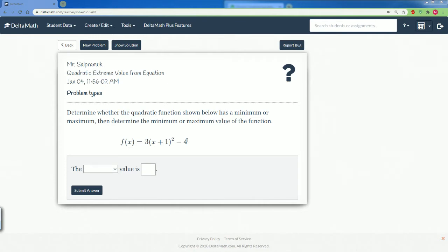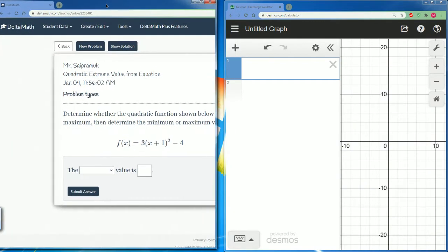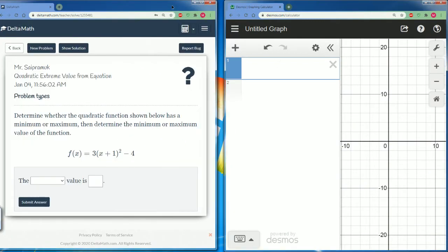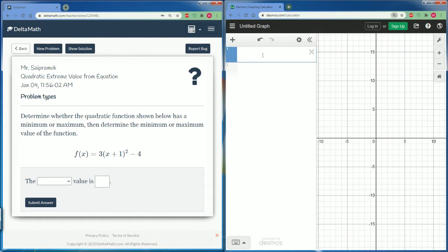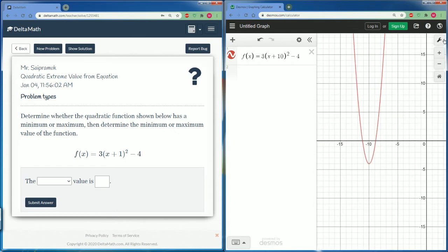Well, it would be easier if we had it graphed, so let's graph it. Here I have Desmos graphing calculator up and I'm going to graph it. So I just type it in exactly the way I see it. f of x is equal to three parentheses x plus one to the second power minus four. Scroll over. There it is.